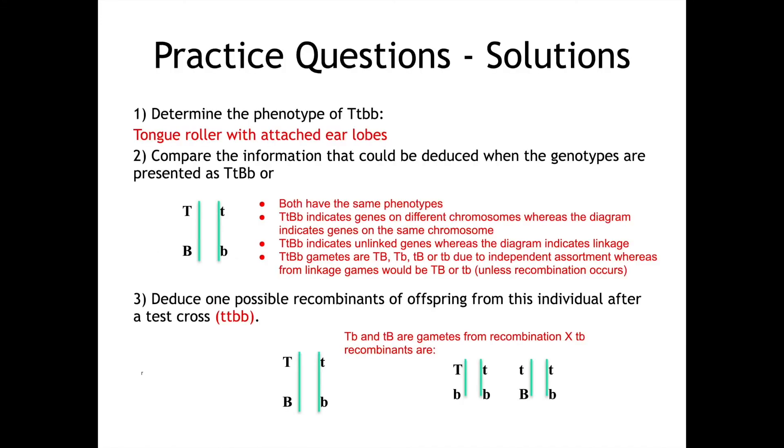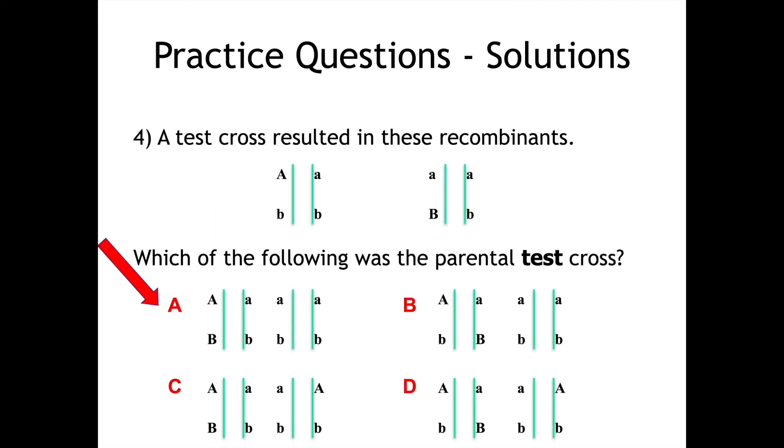In summary, and the shorter version of these answers. So I have them summarized here. You can pause the video to take a look. I have explained one, two, and three quite thoroughly already. So I won't go through these in tons of detail. But this one is the one that I just went through in a lot more detail. A test cross resulted in these recombinants. Which of the following was the parental test cross.